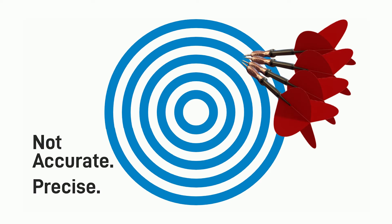Now these darts, being very repeatable, have a very high level of precision. However, they miss the target — they are not accurate. When we talk about precision, we talk about a degree of exactness. You can think about this as a repeatability of these darts: they can hit that target exactly where they are, over and over again.